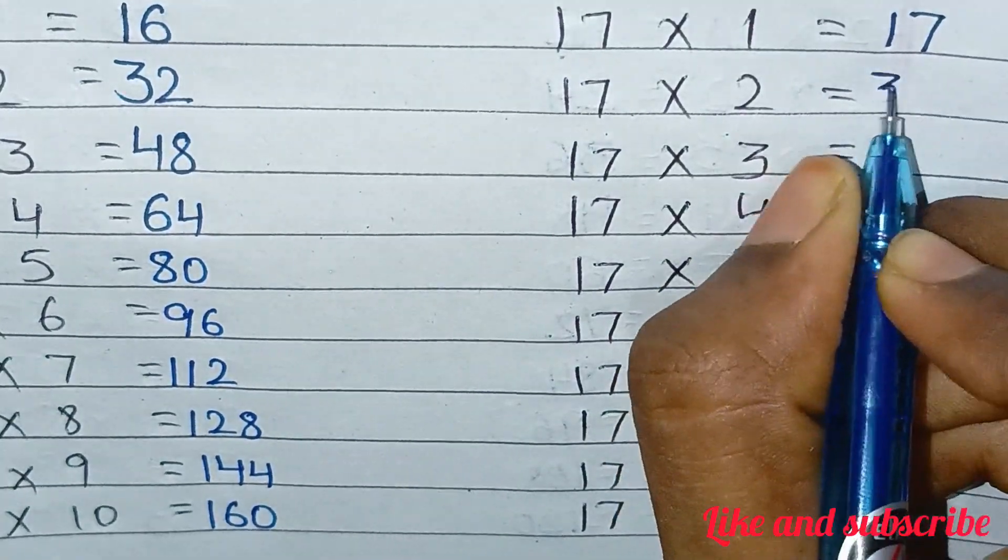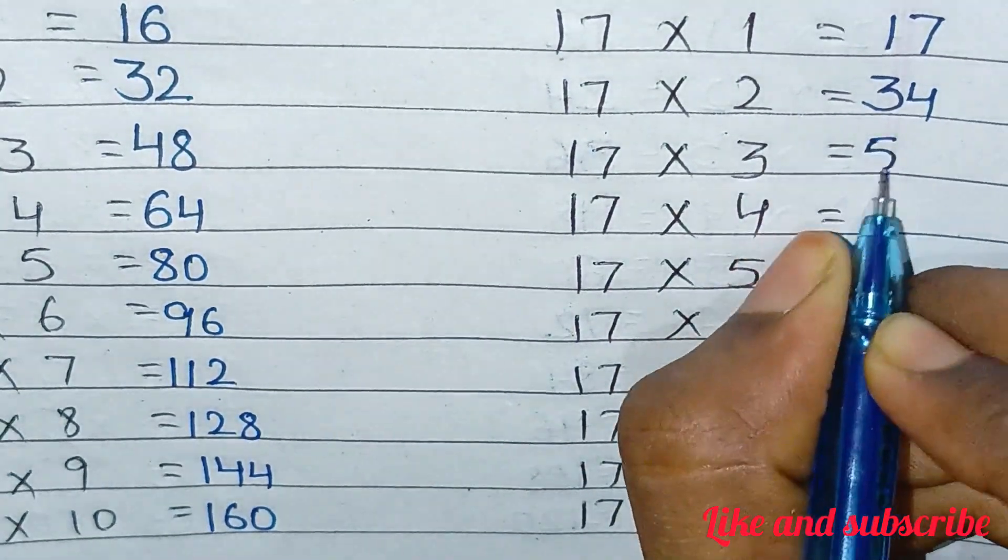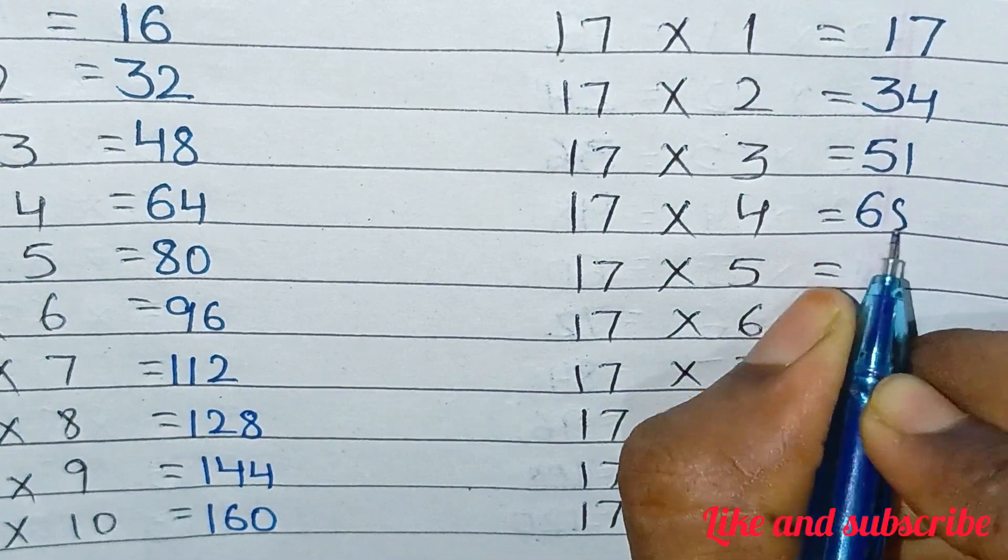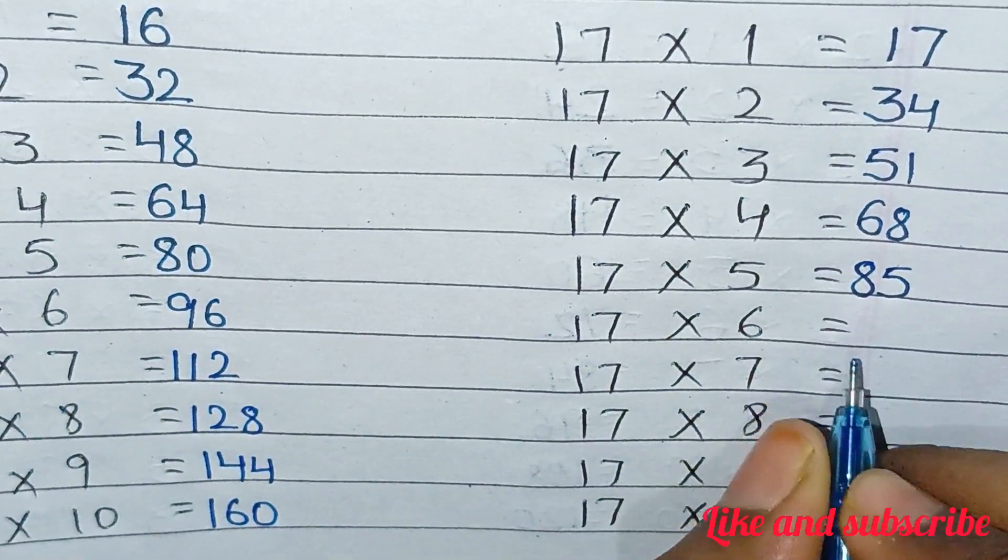17×1=17, 17×2=34, 17×3=51, 17×4=68, 17×5=85.